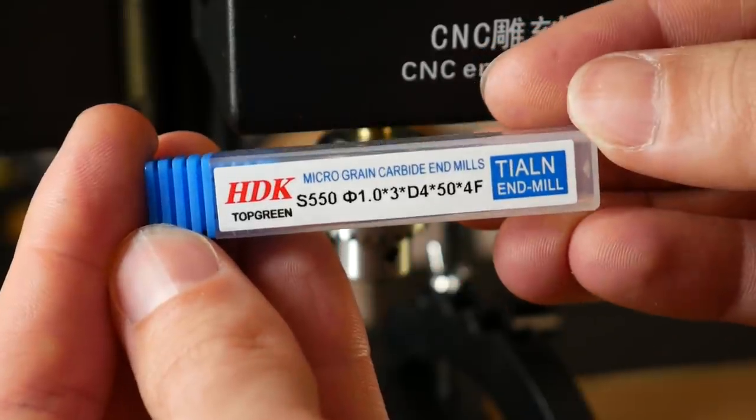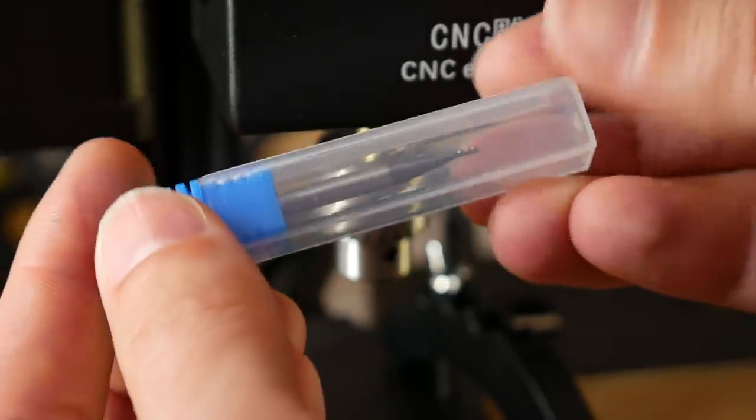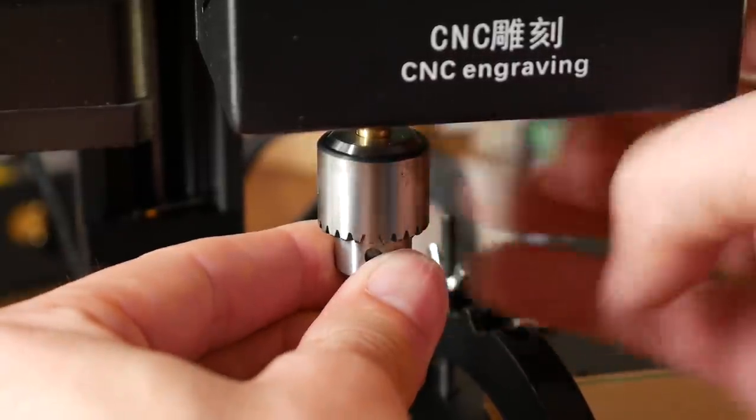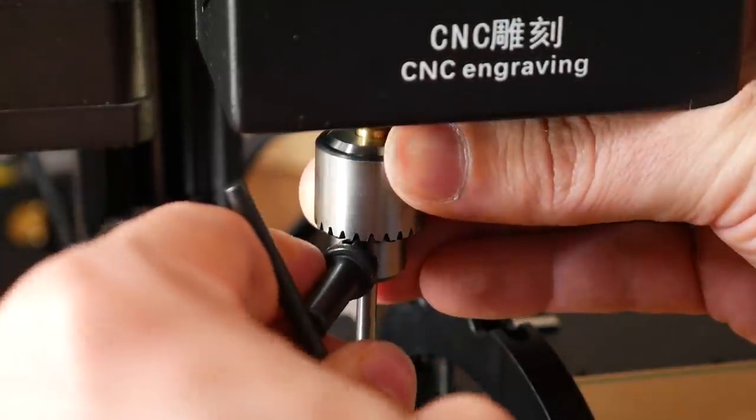This system should be sufficient for very light milling like we're doing. The machine comes with a single 1mm diameter end mill. It's fitted into the chuck on the end of the electric motor, and this works exactly like a drill. You place it with your fingers before tightening the chuck with the included key.